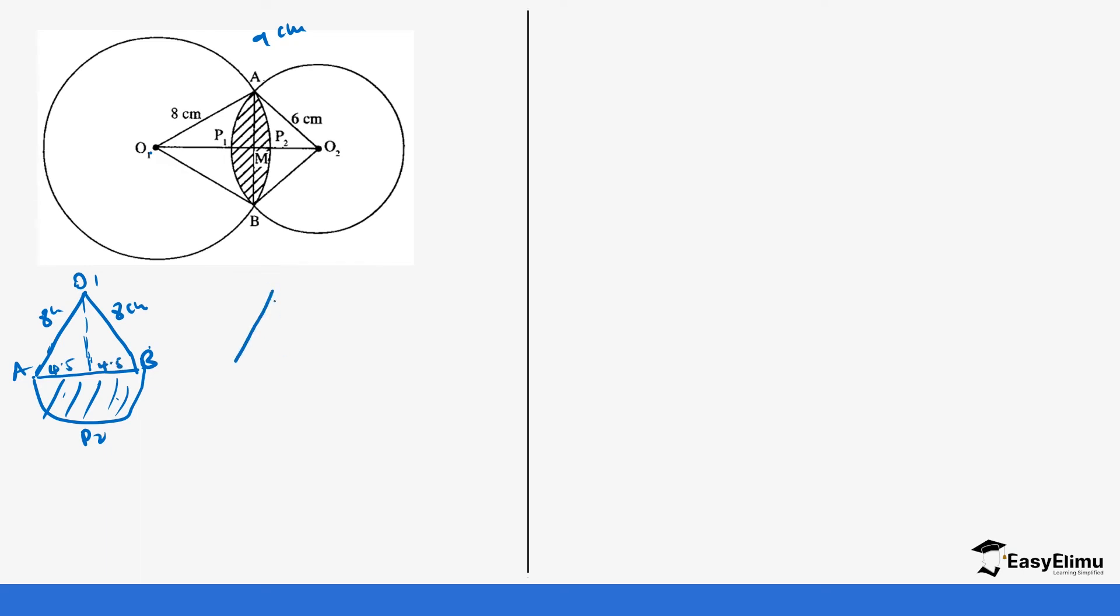Same case, the next sector of the smaller circle looks like this. This is O2. This is six centimeters, six centimeters. And then you still have AB which is the same, they share the same. And then there's a perpendicular bisector. This is still 4.5, 4.5.